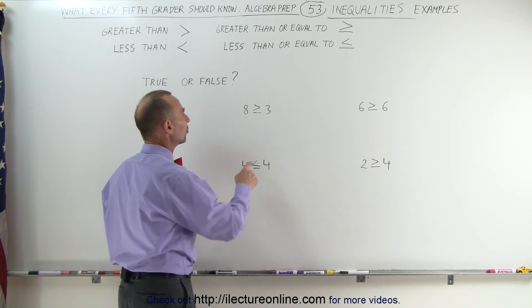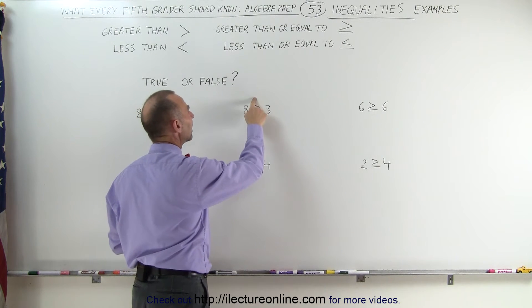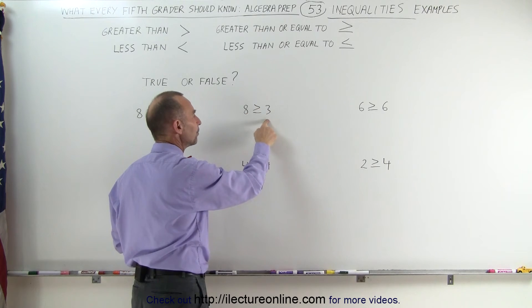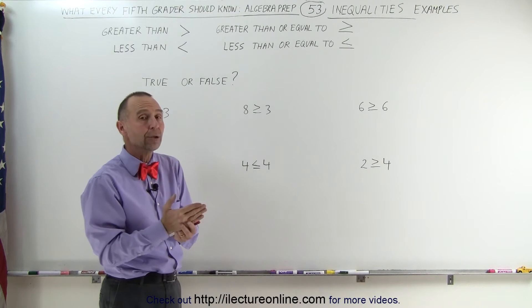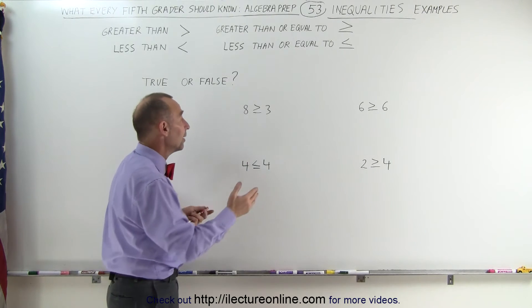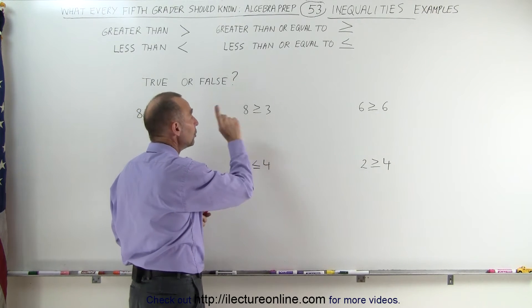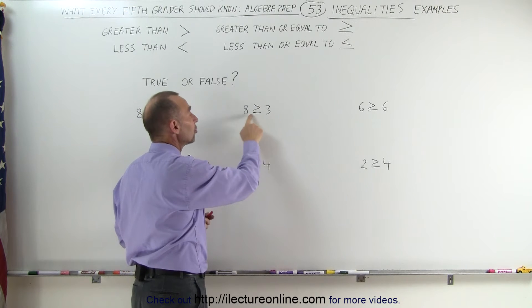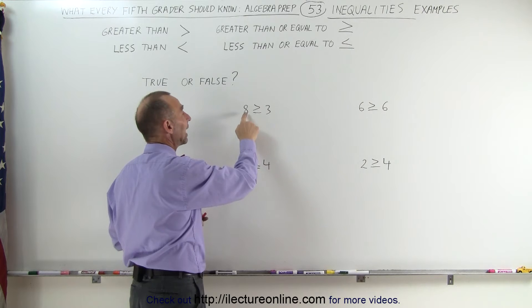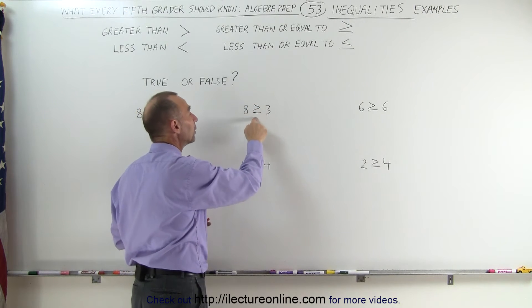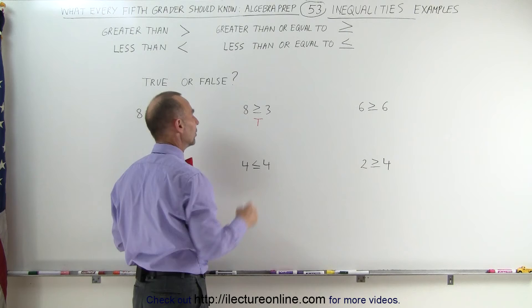Here we have the expression 8 is greater than or equal to 3. Only one of the two conditions must be true. Either it's greater than or it's equal to. For one thing, we know it's not equal to, but we do know that 8 is larger than 3, so therefore this must be a true statement, because it says 8 greater than or equal to 3. So this makes that a true statement.